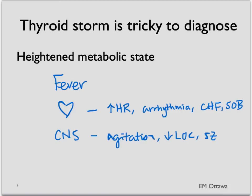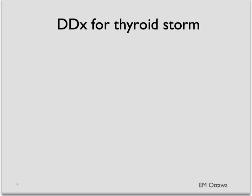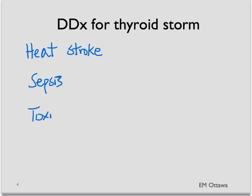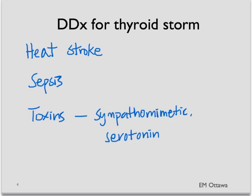What conditions can you think of that look like this? There are three main broad categories. First, heat stroke — the history might be helpful. The second category is sepsis, which can affect any part of the body. The last broad categories are toxins, such as sympathomimetics, serotonin syndrome, or neuroleptic malignant syndrome. They can all look like thyroid storm.